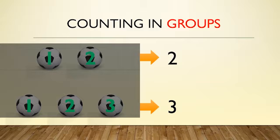Now the lower row: one, two, three, then write down three. Now what you have to do? You have to add these two numbers: two plus three equals five. That means there are five balls in this set. This process is counting in groups. It will be very easy compared to our first method.